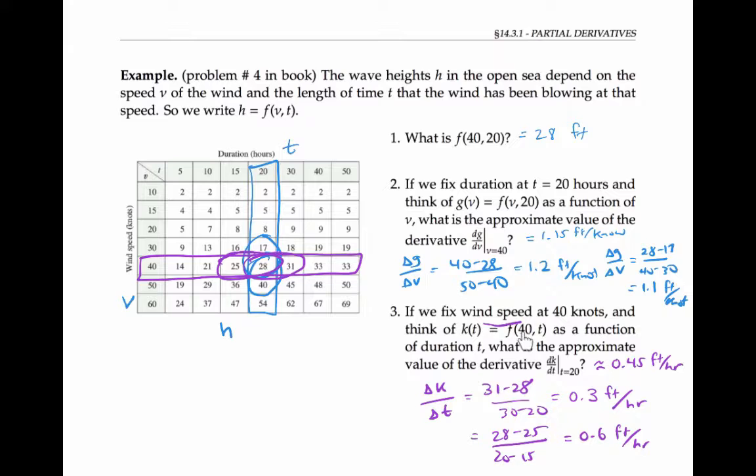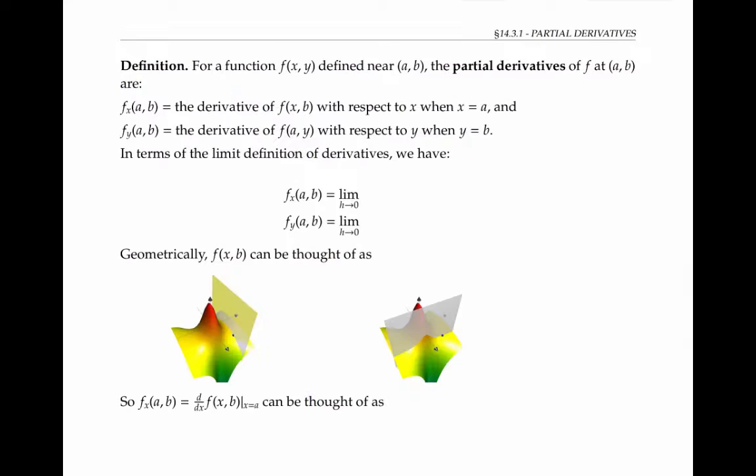Holding one variable constant and taking the rate of change with respect to the other variable is exactly the idea behind partial derivatives. For a function of two variables, f of xy defined near the point AB, we can define the partial derivatives of f at the point AB as follows.